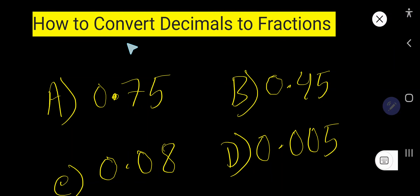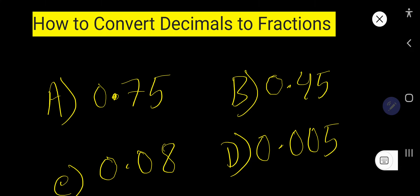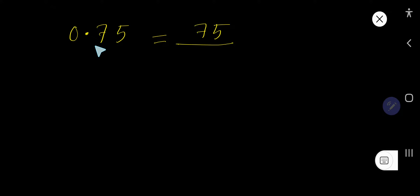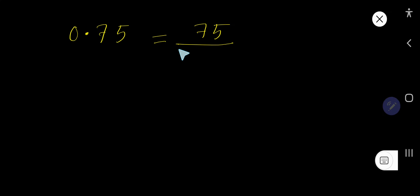In this video you will learn how to convert decimal to fraction. These are four examples that will help you learn how to convert decimal to fraction. Converting decimal to fraction is easy. Let us consider the first example: converting 0.75 as a decimal number to a fraction.